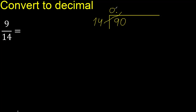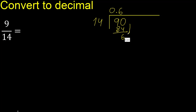14 multiplied by 7 is greater, therefore we multiply by 6, which gives 84. It is not greater. We subtract to get 6. There is no further digit, so we complete with 0.